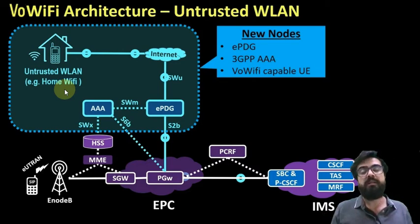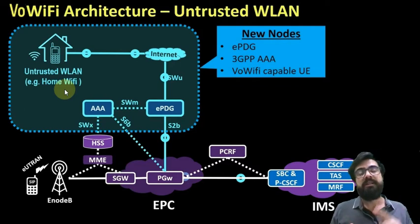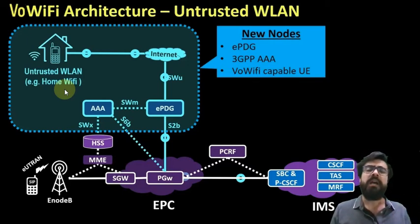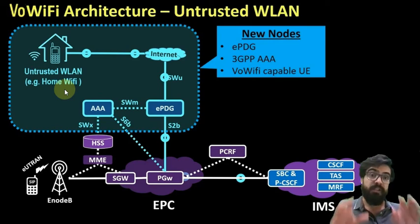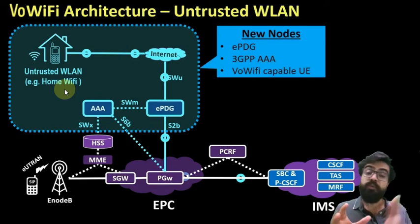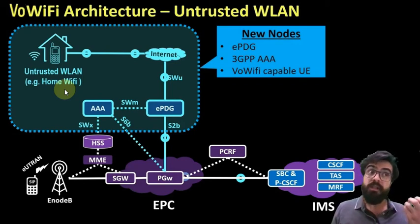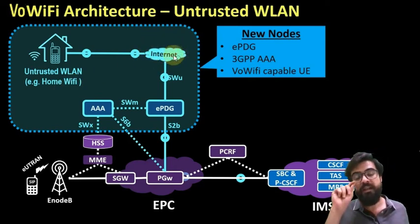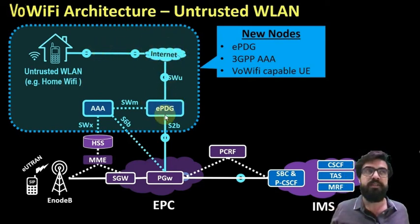As the UE does some sorts of event measurements all the time — for example, it searches for neighboring cells to do cell reselection, or it keeps listening to broadcast messages — when the UE finds itself in a situation of poor cellular coverage but a strong Wi-Fi internet connection, it searches first for a DNS and then sends a message towards the EPDG.